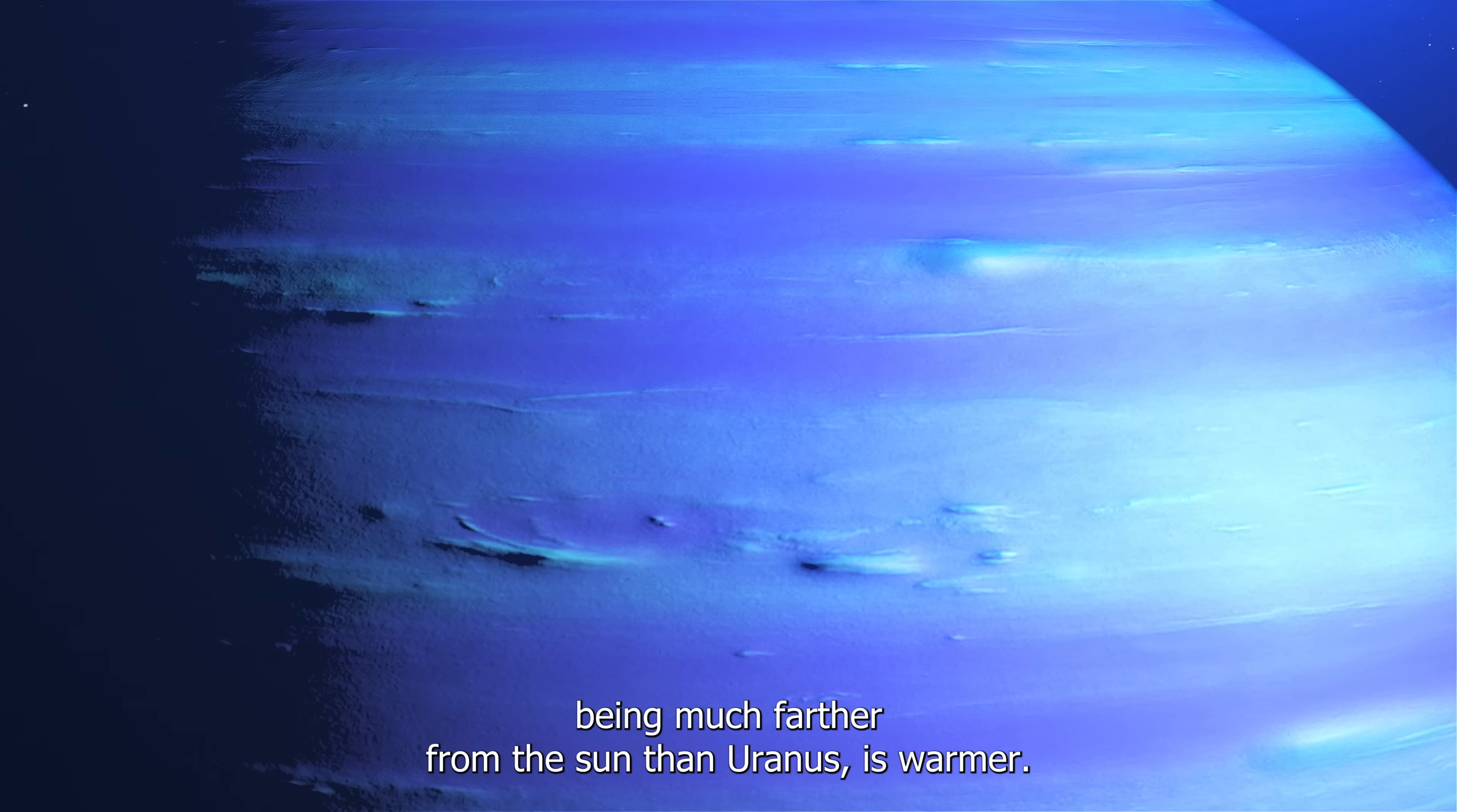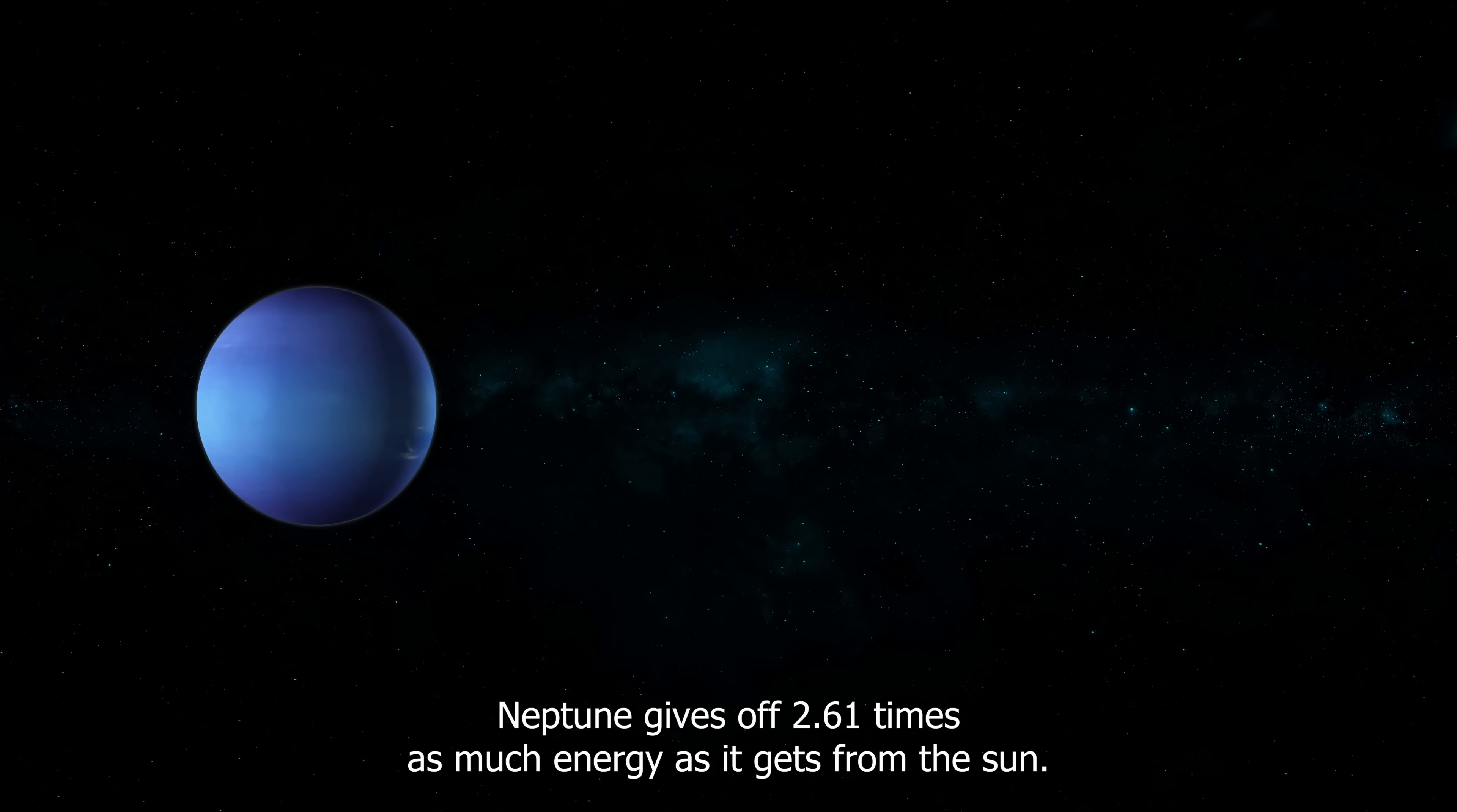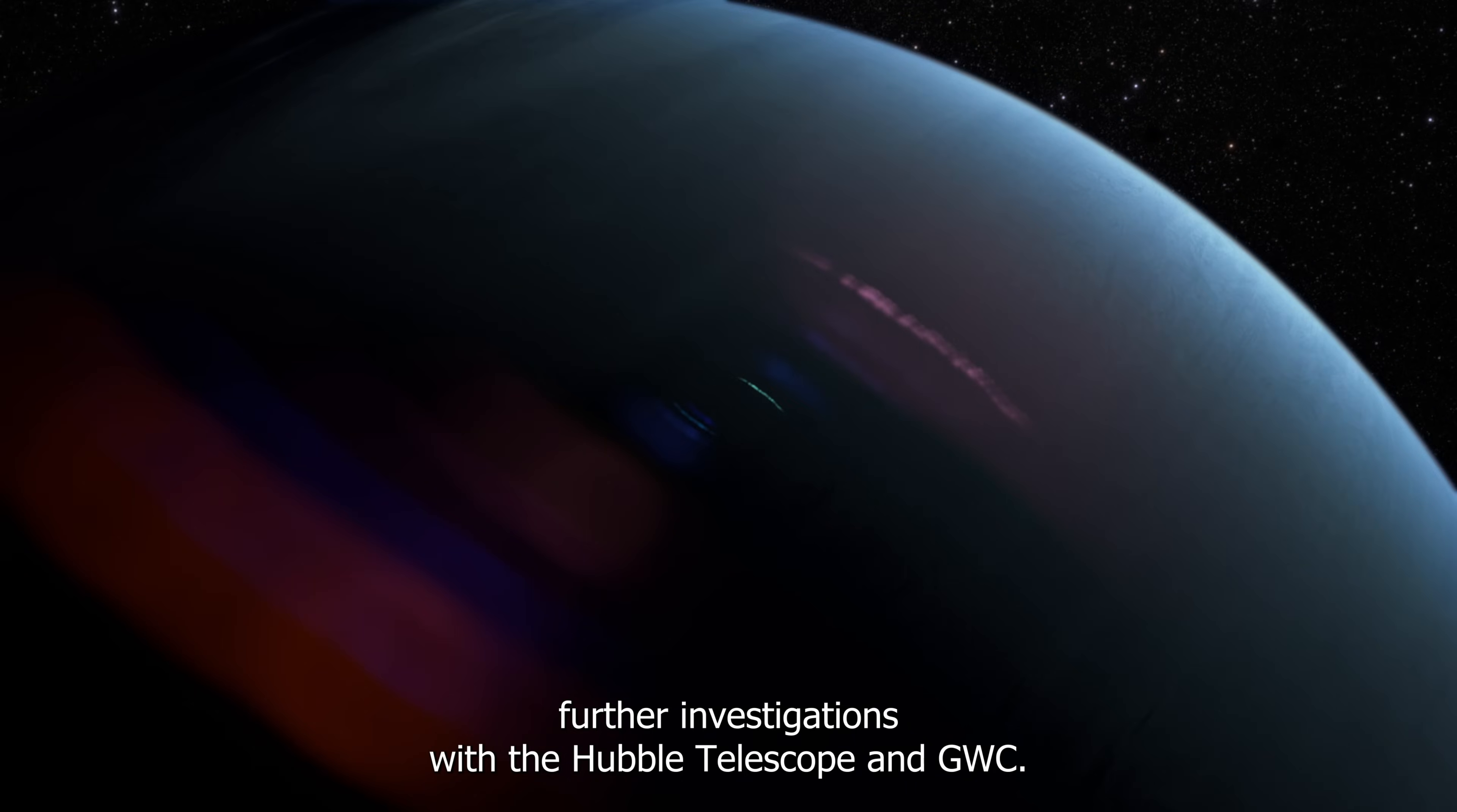Neptune, despite being much farther from the Sun than Uranus, is warmer. Uranus, which is closer to the Sun, only gives off 1.1 times the energy it gets from the Sun. On the other hand, Neptune gives off 2.61 times as much energy as it gets from the Sun. It's a bit puzzling because, by the usual standards, Uranus should be warmer due to its closer proximity to the Sun. But Voyager's report was confirmed by further investigations with the Hubble telescope and JWST.